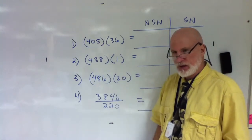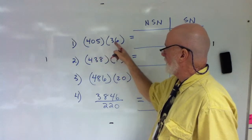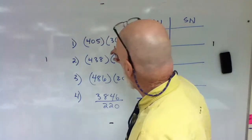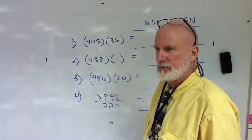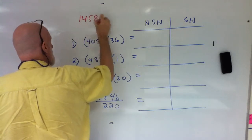So what's the answer for the first one? 405 times 36. Let's work up here, we'll use this as scrap paper. What's mathematically, what is 405 times 36 mathematically? Fourteen thousand five hundred and eighty.